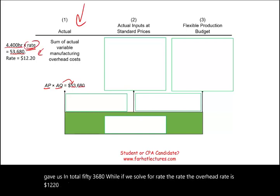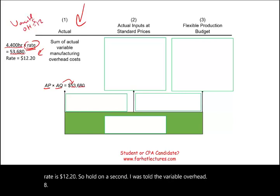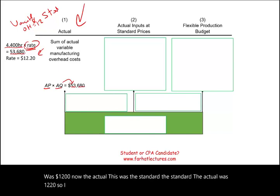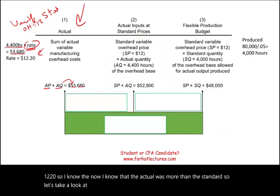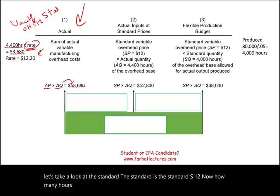Hold on a second — I was told the standard variable overhead rate was $12, but the actual was $12.20. So the actual rate was more than the standard. Now let's look at the standard column. The standard rate is $12. How many hours should I have spent? Let's see — we produced 80,000 pens.